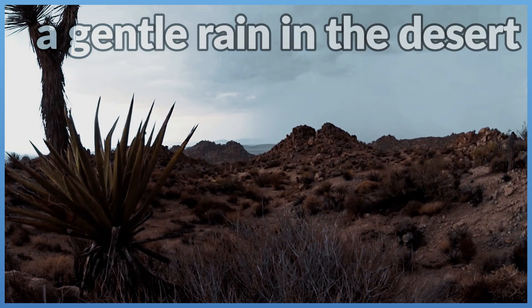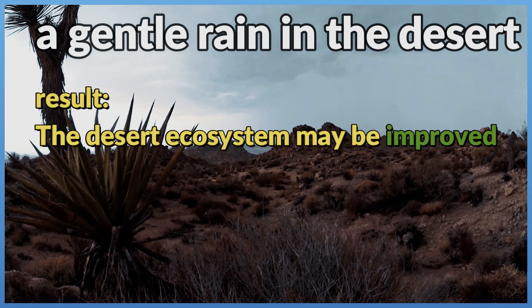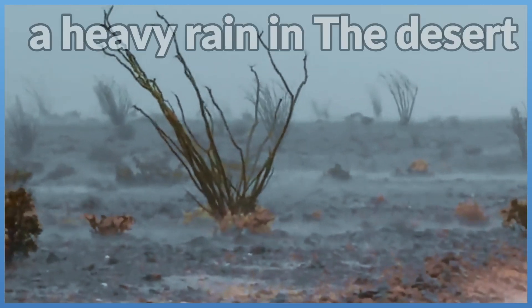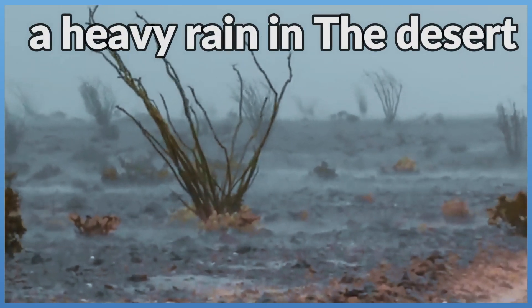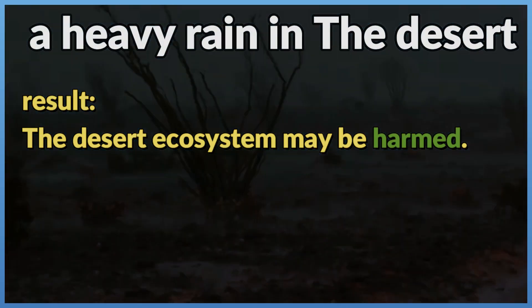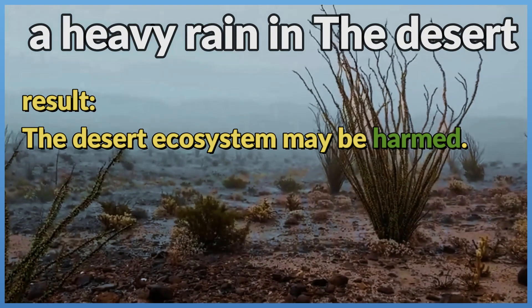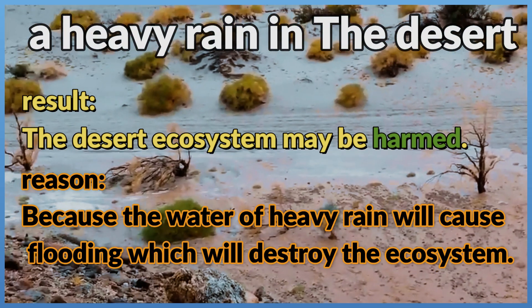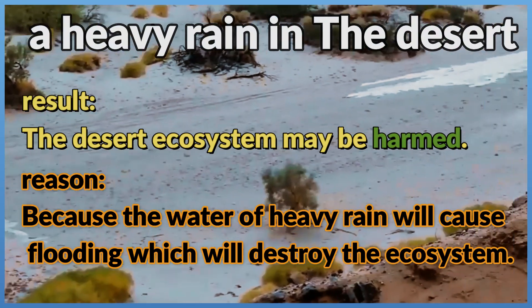There is a gentle rain in the desert. Result: The desert ecosystem may be improved. Reason: Because rainwater will feed the plants, the producers, which will feed the organisms. There is a heavy rain in the desert. Result: The desert ecosystem may be harmed. Reason: Because the water of heavy rain will cause flooding, which will destroy the ecosystem.